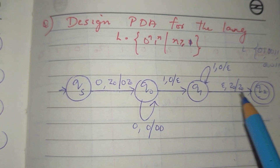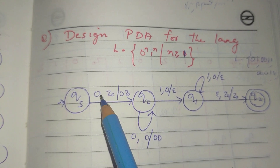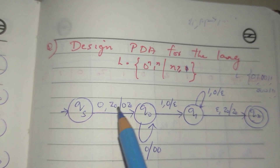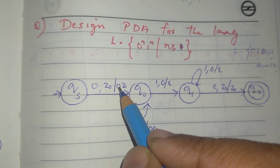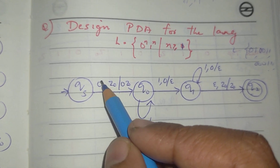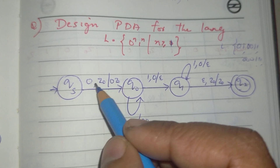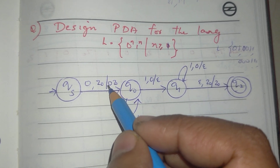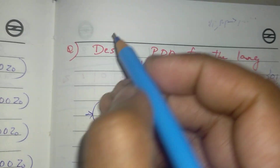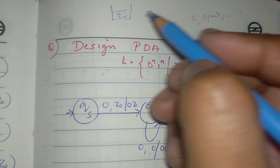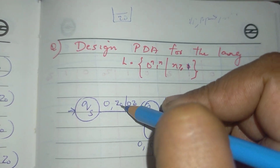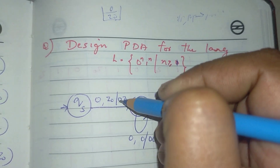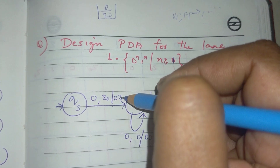Now let's look at the state notation. First, we will define what we do in this notation. We will call this the input symbol. Then we will define the stack top bar, then we will add 0 to the input symbol. So the input symbol notation uses: input symbol, then stack top bar, then push operation using a slash.